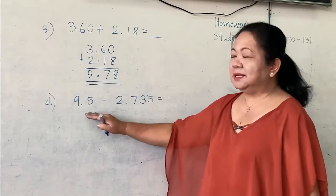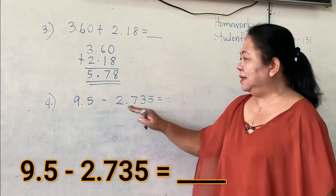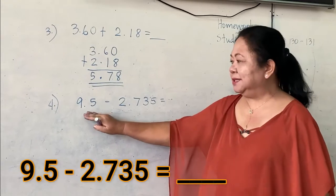Now, here is another example. This is subtraction. But again, there are different numbers of digits.